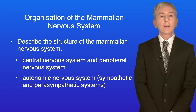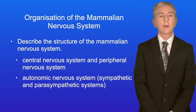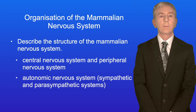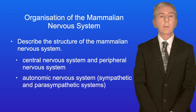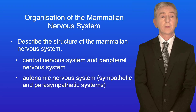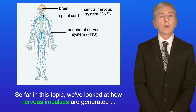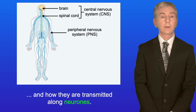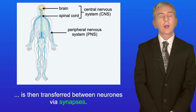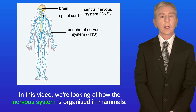Hi and welcome back to Free Science Lessons. By the end of this video you should be able to describe the structure of the mammalian nervous system. This includes the central nervous system and the peripheral nervous system, as well as the autonomic nervous system including the sympathetic and parasympathetic systems. So far on this topic we've looked at how nervous impulses are generated and transmitted along neurons, and how information is transferred between neurons via synapses. In this video we're looking at how the nervous system is organized in mammals.